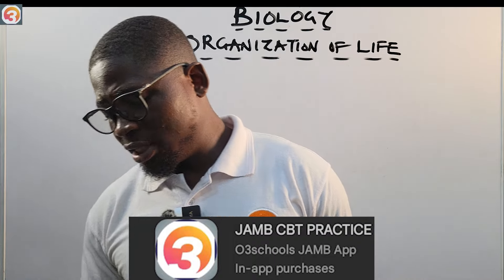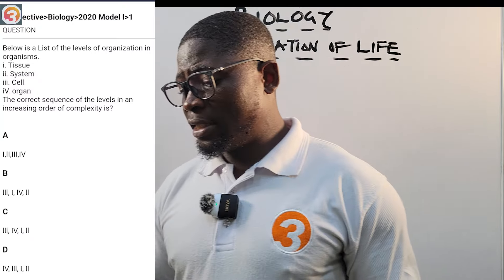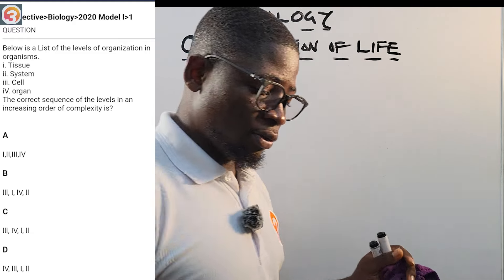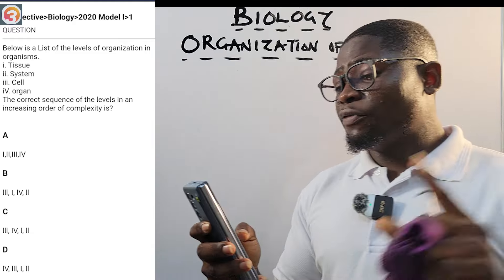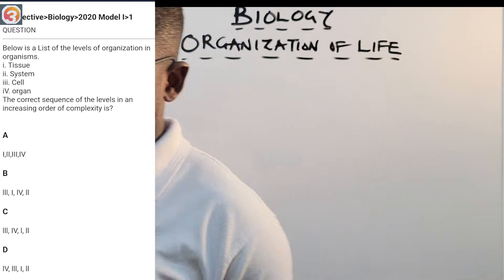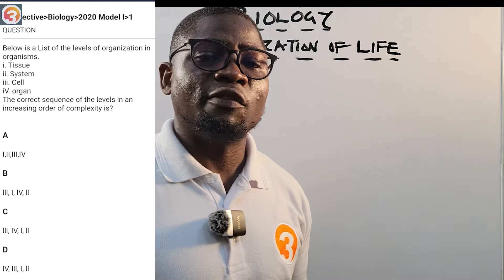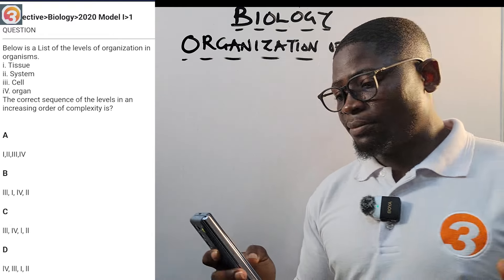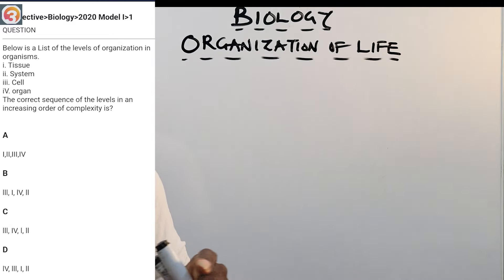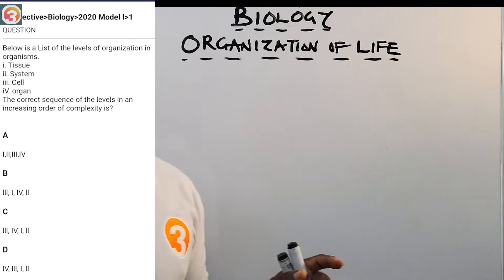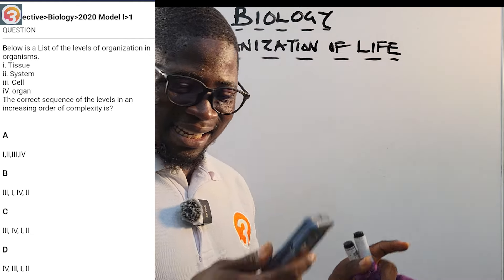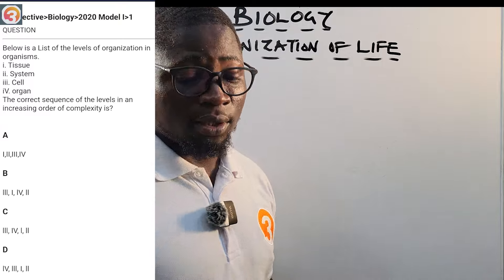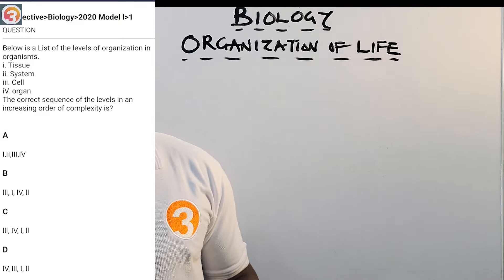Let's take a question from the app using the question search feature. It's a 2020 question number one. They say: below is a list of the levels of organization in organisms — one: tissue, two: system, C: cell, D: organ. The question asks for the correct sequence in increasing order of complexity from smallest to highest. We'll come back to this question at the end of class.